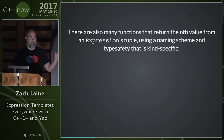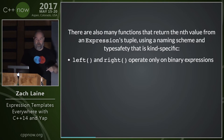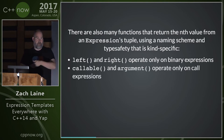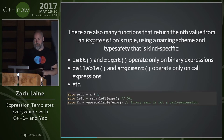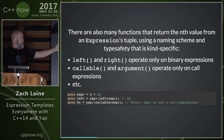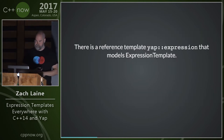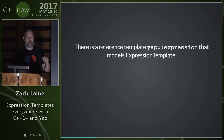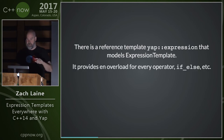YAP also has accessor functions for the tuple inside an expression: 'left' and 'right' get the left or right operands, 'callable' and 'argument'/'arguments' work on call expressions. These give nice static asserts when used inappropriately — for example, calling 'callable' on a plus expression gives a static assert. YAP has one built-in expression template, used for reference — it has all operator overloads, if-else, and other features. It's great for quick prototyping but typically you'll want a custom expression template with only the operators you care about.